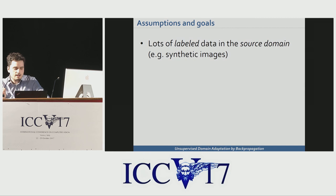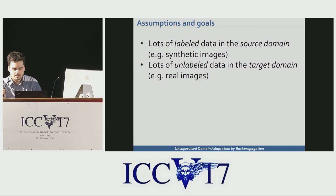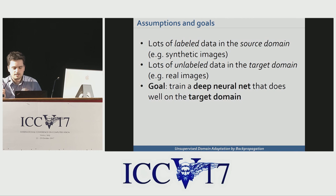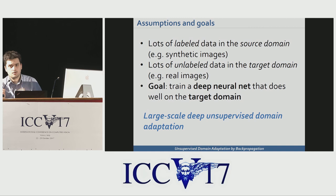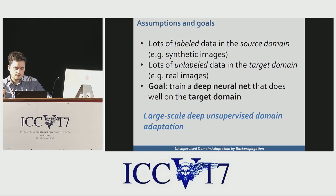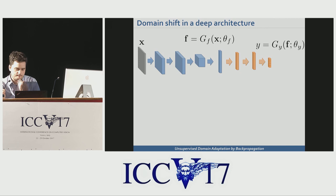Today I will consider the following scenario: assume that you have lots of labeled data in the source domain, like synthetic images, and lots of unlabeled data in the target domain, such as real images. Your goal is to train a deep network which does well on the target domain. Such a scenario is called unsupervised domain adaptation. There could also be a semi-supervised domain adaptation case, when you have a small amount of labeled data in the target domain, but the ideas I'll discuss today generalize to those scenarios pretty straightforwardly.